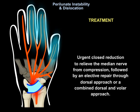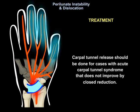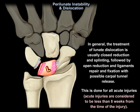The treatment is urgent closed reduction to relieve the median nerve from compression, followed by elective repair through a dorsal approach or a combined dorsal and volar approach. Carpal tunnel release should be done for cases with acute carpal tunnel syndrome that does not improve with closed reduction. For acute injuries — defined as less than eight weeks from the time of injury — treatment includes closed reduction and splinting, followed by open reduction, ligament repair, fixation of the carpal bones, and possible carpal tunnel release.